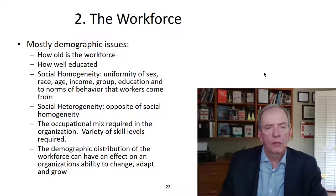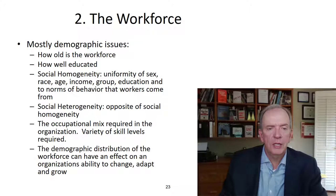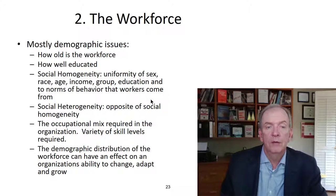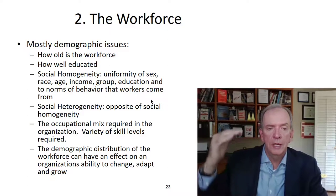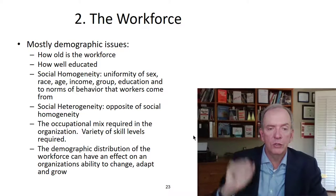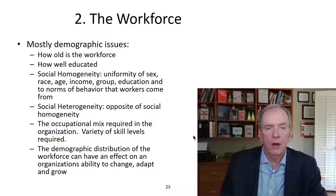Category two is the workforce — mostly demographic issues. How old is the workforce? How well educated is it? Social homogeneity — uniformity of sex, age, background. If most people started 25 years ago and are still there, there's a huge discrepancy in age demographics. That group may not be willing to change as quickly as a younger workforce. Sometimes it's very mixed, with real diversity of age, culture, and backgrounds, which can be very advantageous because the business isn't rooted in one particular train of thought.